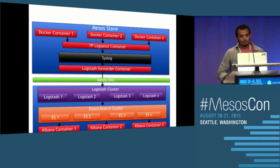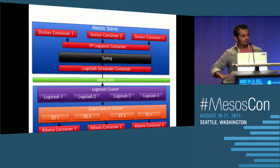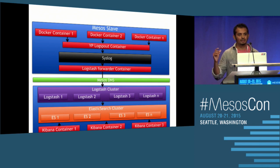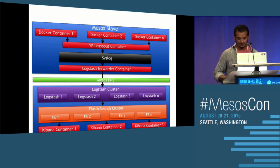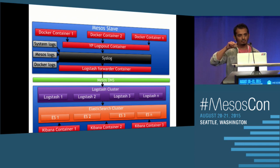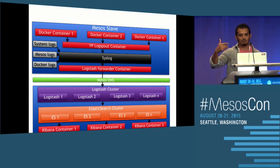This is good for application logs, but we also wanted a common view for everything — system logs, Mesos slave logs, master logs, and all of that. We do the same thing: we take all of that, send it to syslog, and the logstash forwarder picks it up and processes it the same way.